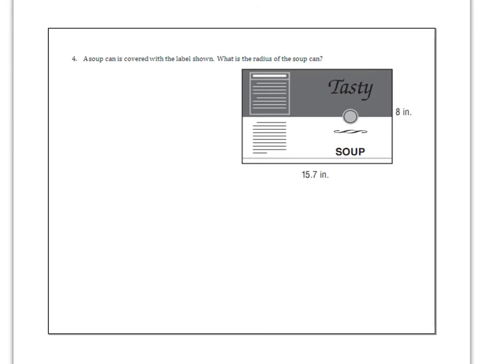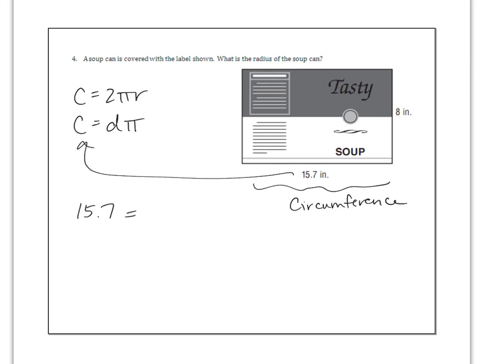So if you took this label and rolled it up to fit it around the can, the 15.7 would be the circumference. It'd be the distance around the bottom of the can. So think about the formula for circumference. Circumference is 2πr or circumference is also diameter times π. So what you're going to do is plug in the 15.7 for the C. So you can go 15.7 equals 2πr.